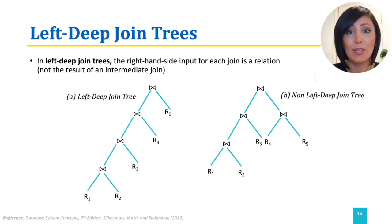For example, using the same relations R1 to R5 and joining them, the tree in A can be rewritten to the tree in B. The tree depicted in B at the root joins two intermediate relations computed from previous joins of input tables R1 to R3 and R4 and R5.